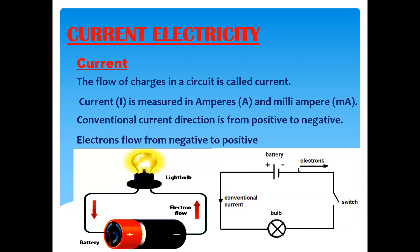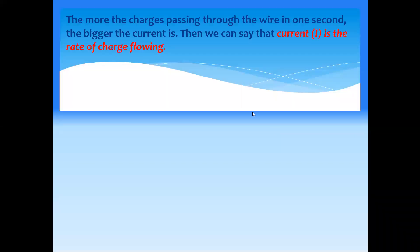For a battery, electrons flow from the negative terminal, but the conventional current direction is from positive to negative. If there are a greater number of charges passing through a wire in one second, the current will be higher. Current is denoted by I, which is the rate of charge flow: current equals charge Q divided by time t.